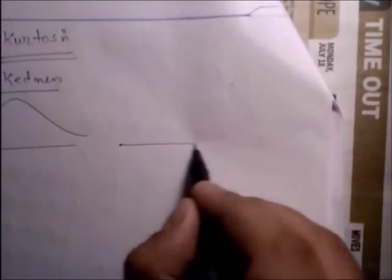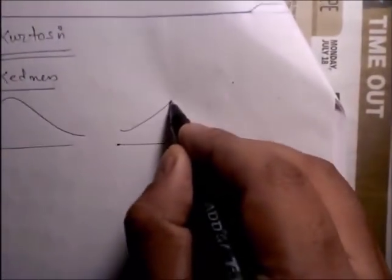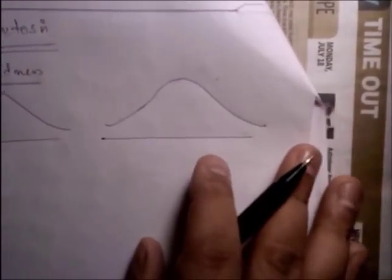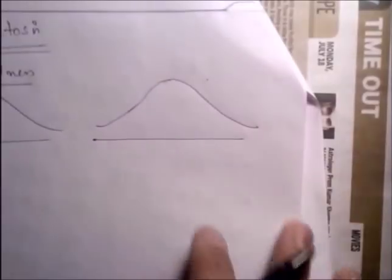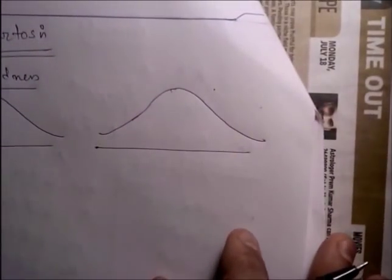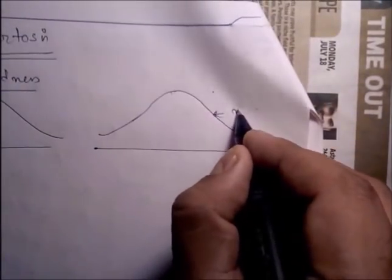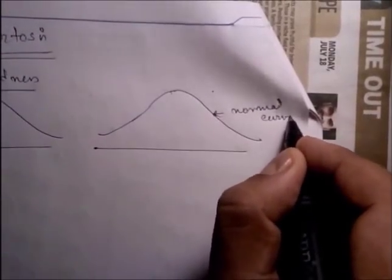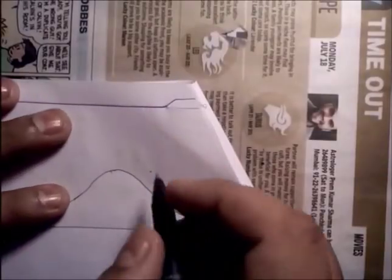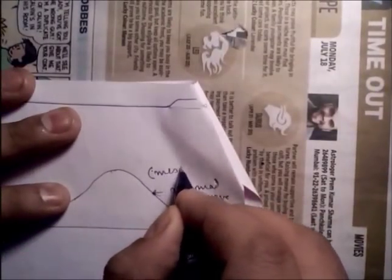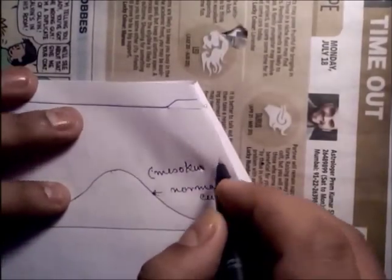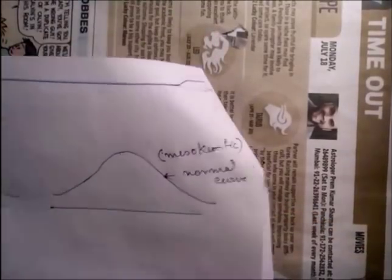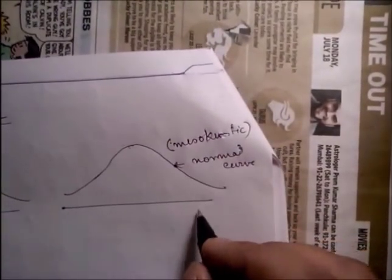A normal curve is called mesokurtic. If the curve is more peaked than the normal curve, it is called leptokurtic.